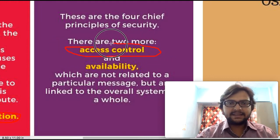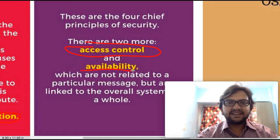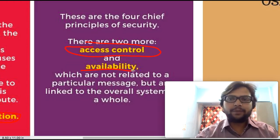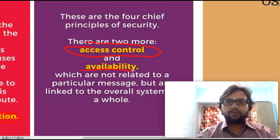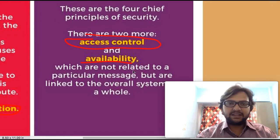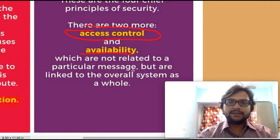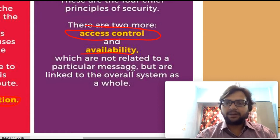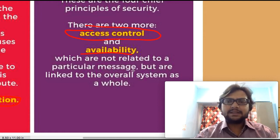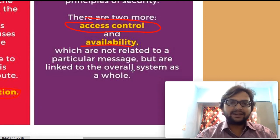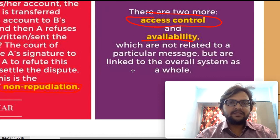There are four chief principles of security, and two more: access control and availability. Access control means it should not be accessed by any unknown person — for example, WhatsApp, email accounts, Facebook, and bank accounts. Availability means it should be accessible from every place based on basic requirements. For example, to access my bank account, I need a computer or smartphone with internet access — that is the basic necessity.